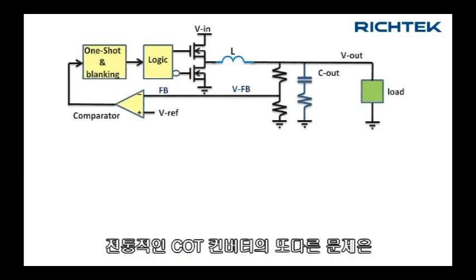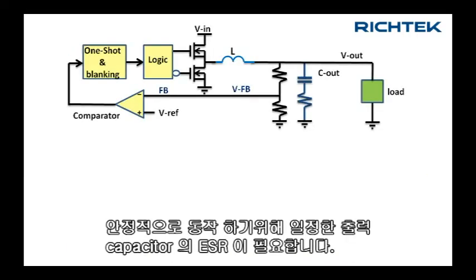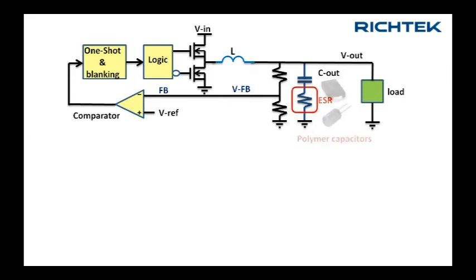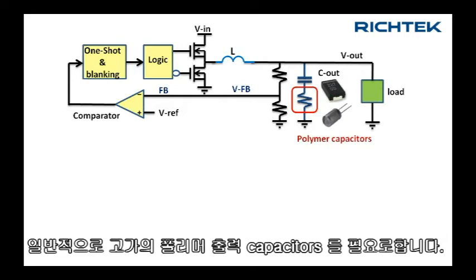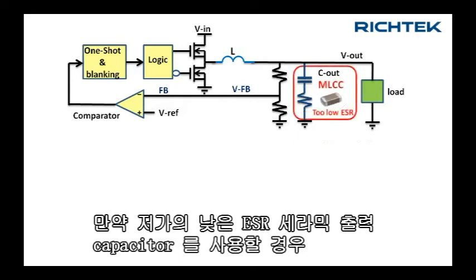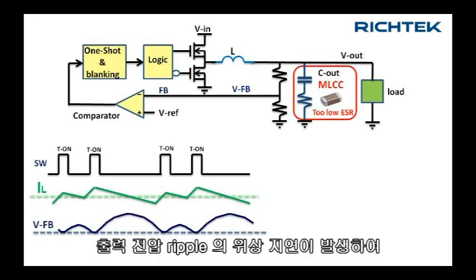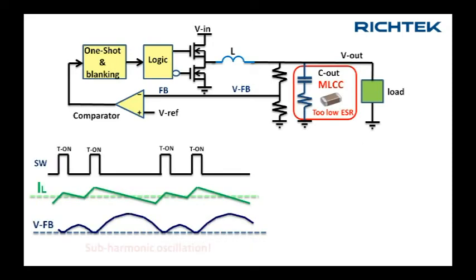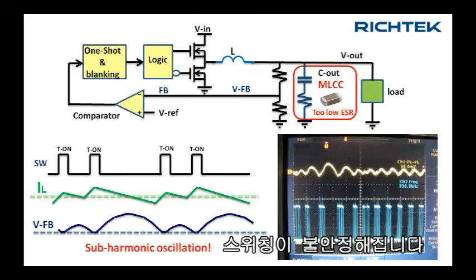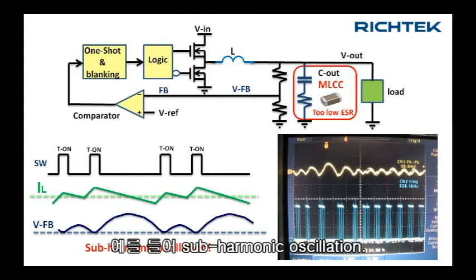Another problem of traditional COT converters is the fact that they need a certain amount of output capacitor ESR to work in a stable manner, normally requiring expensive polymer output capacitors. If you use the cheaper low ESR ceramic output capacitors, the phase shift in the output voltage ripple will result in unstable switching like subharmonic oscillation.